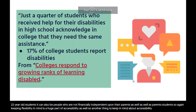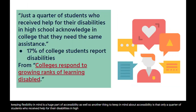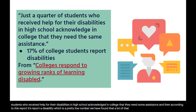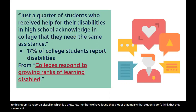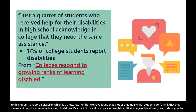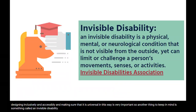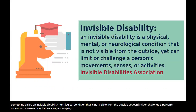Only a quarter of students who received help for their disabilities in high school acknowledge in college that they need assistance. According to this report, only 70% of college students report a disability — a pretty low number. We've found that many students don't think they can report cognitive issues or learning disabilities to the accessibility office. This all goes to show that designing inclusively and accessibly is very important. Another key concept is the invisible disability: a physical, mental, or neurological condition not visible from the outside, yet which can limit or challenge a person's movements, senses, or activities.